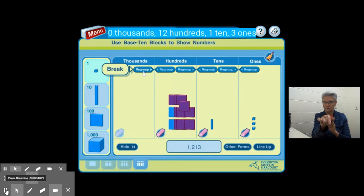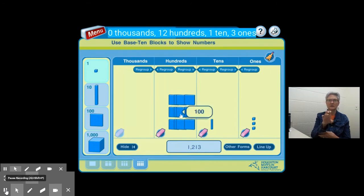Instead of having 1,000, I now have 10 hundreds. One hundred, two hundreds, three hundreds, four hundreds, five hundreds, six hundreds, seven hundreds, eight hundreds, nine hundreds, ten hundreds, or one thousand.